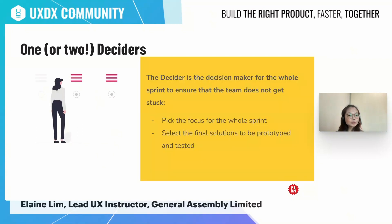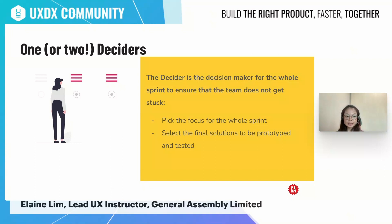You will also need one or two deciders who will be the decision-makers for the whole sprint — like the CEO of the sprint. When there are any decisions to be made, these decisions will be deferred to the deciders. This helps ensure that the team does not get stuck or hung up on making decisions and is able to progress with the agenda of the sprint.